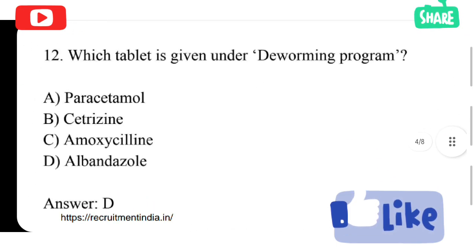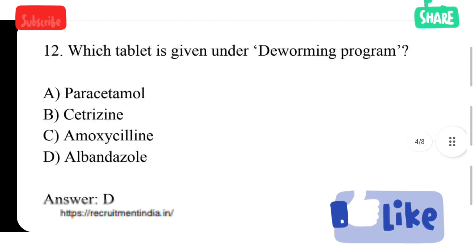Next question. Which tablet is given under de-worming program? Option A paracetamol, option B citrizine, option C amoxicillin, option D albendazole. Option D is correct answer. Albendazole tablet is used in de-worming. That is, in children, to remove worms, this program is done annually two times. Albendazole tablets are given to children.